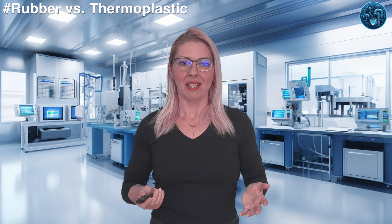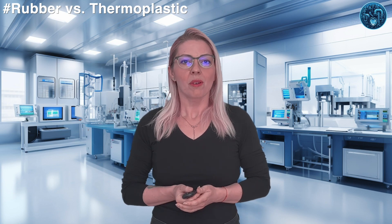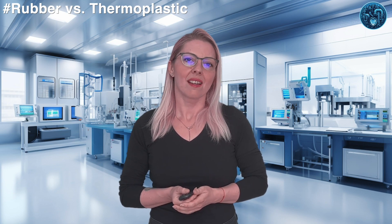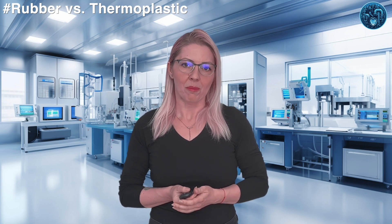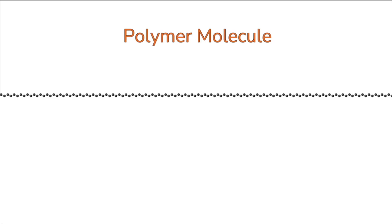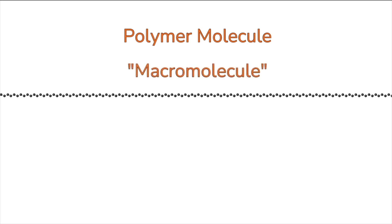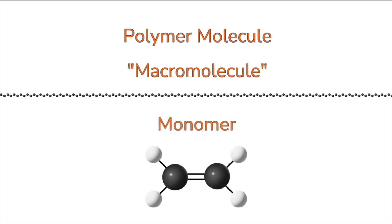Let's start with the basics. Rubber and plastic are both polymers, which is a fancy way of saying they're made up of long chains of repeating molecules, but that's where the similarities end and the differences begin.